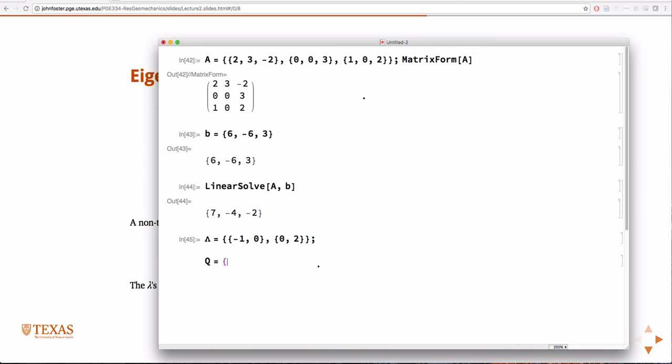Q is equal to the eigenvectors, which the eigenvectors associated with the first eigenvalue was [1, 1]. And the eigenvectors associated with the second one was [5, 2]. And just due to the notation in Mathematica, I have to transpose that to get it into the column vector.